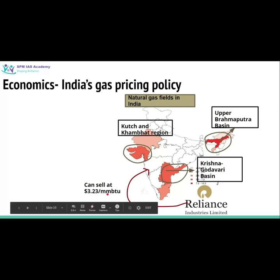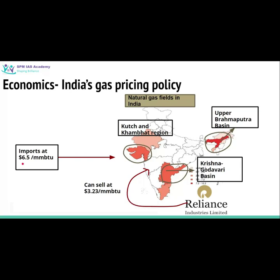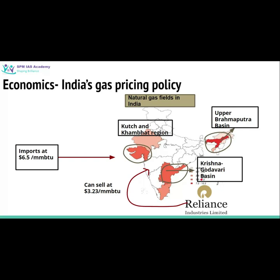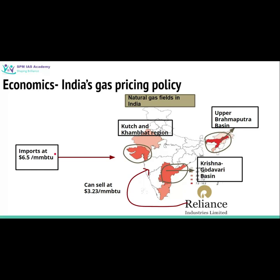Meanwhile, India imports natural gas and pays about 6.5 US dollars per MMBTU — roughly double the domestic ceiling price. So producers in India have no incentive to produce natural gas because the highest price the government has fixed is so low that they do not profit from it. When there is no profit, they naturally do not produce much natural gas in India. On this ground, the International Energy Agency has criticized the Indian government for discouraging natural gas production in India.